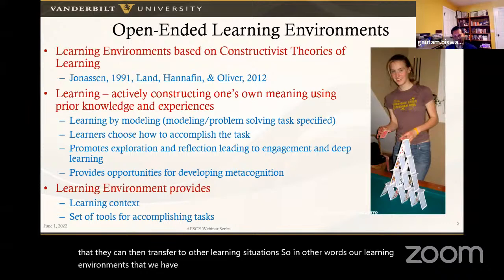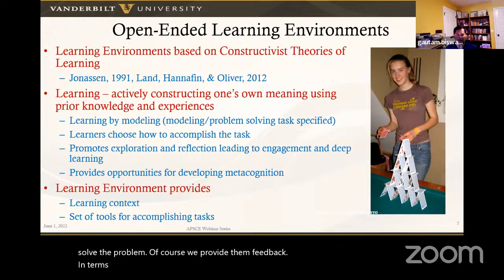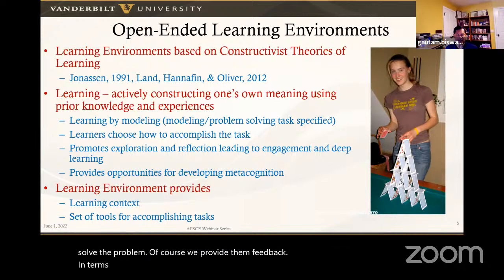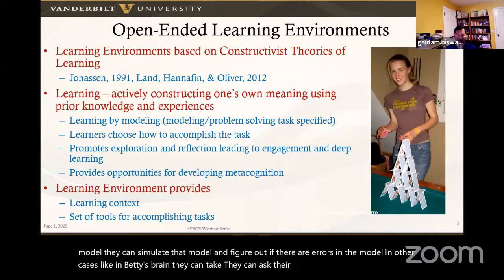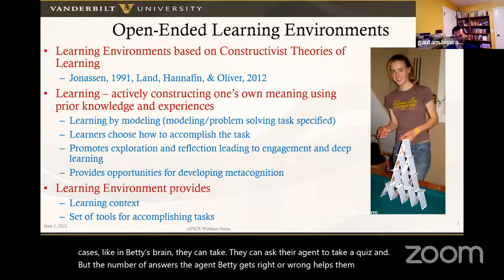Our learning environments provide a context and a set of tools for building models and solving problems, and students use their own approaches. We provide feedback in terms of correctness — for example, if they're building a simulation model, they can simulate it and identify errors. In Betty's Brain, they can ask agent Betty to take a quiz, and the number of right or wrong answers helps them determine where they made errors in their model.